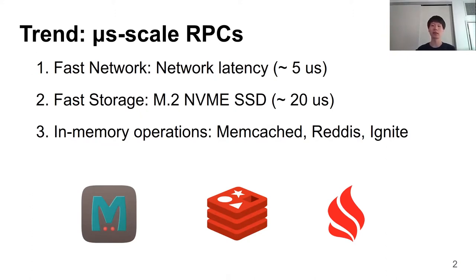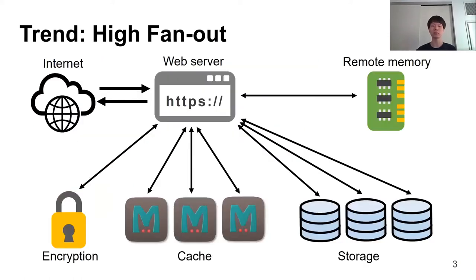Over the decade, network and storage get faster, and in-memory operations become more prevalent. A single home network latency is now less than 5 microseconds. Write operations on storage take less than 20 microseconds. And applications with in-memory operations, like Memcached, Redis, or Apache Ignite, become more popular. Thanks to faster network and storage, many RPCs now only take microseconds of service processing time in modern data centers.